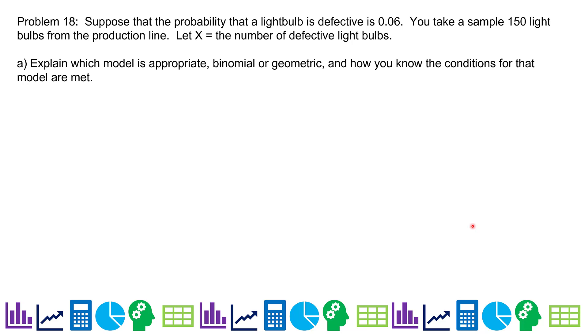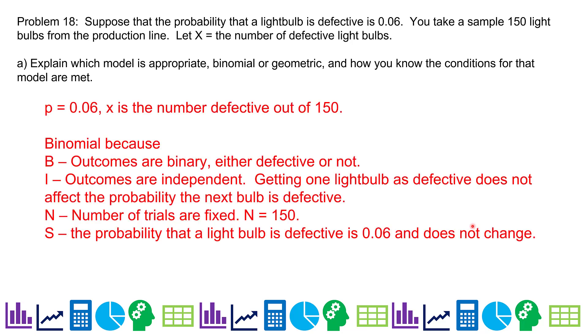Problem 18. Suppose the probability that a light bulb is defective is 0.06. You take a sample of 150 light bulbs from the production line. Let X equal the number of defective bulbs. So the question is, is this binomial or geometric? And how do you know? First of all, P is 0.06. So X is the number defective out of 150. And it's binomial because the outcomes are binary, either defective or not. Outcomes are independent. Getting one defective light bulb does not affect the probability the next bulb is defective. The number of trials is fixed. It's not like I'm pulling light bulbs until I find a defective one. I am checking exactly 150 light bulbs. And the probability is the same and it doesn't change.